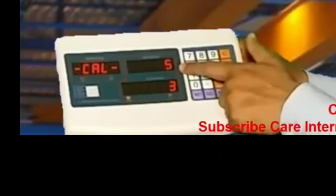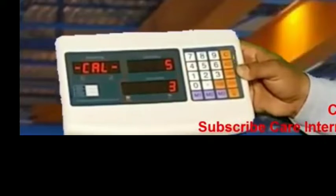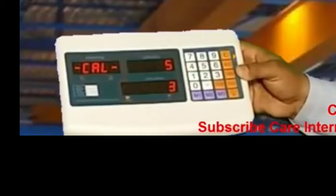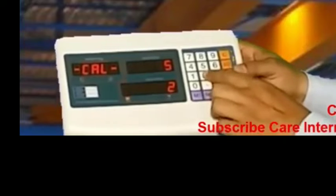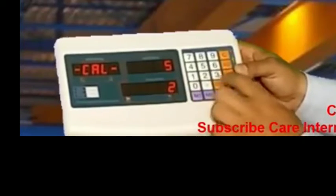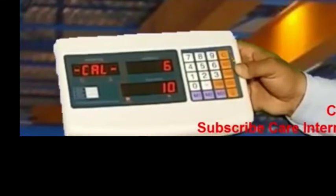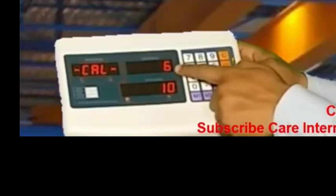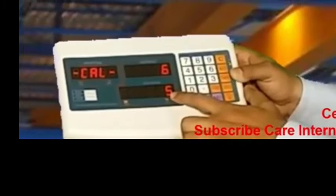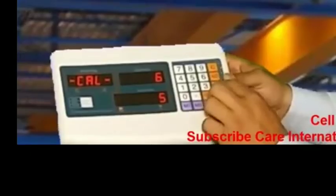CAL 5 has its decimal point. This means how many zeros after the point we need. We need two zeros, so we write 2 and press tear button. CAL 6 shows on the screen. CAL 6 has its division. We set division to 50 grams, so we write 5 here and press tear button. You can see the calibration is complete.